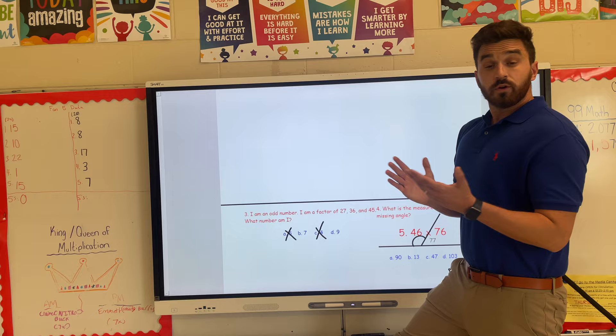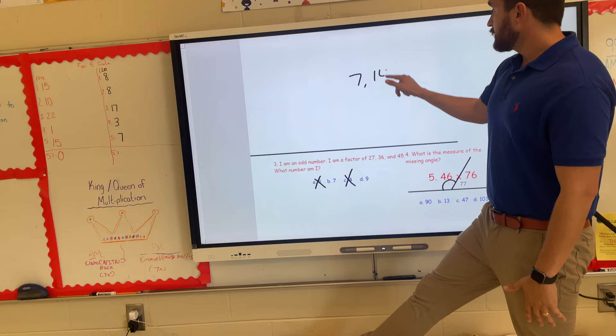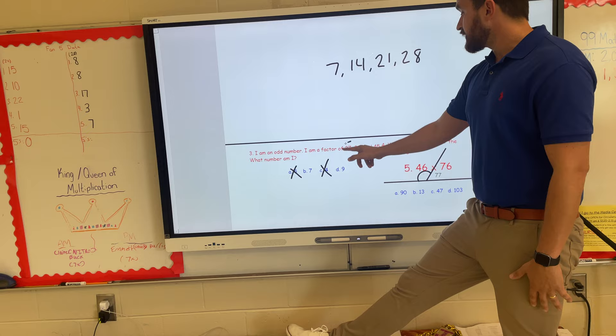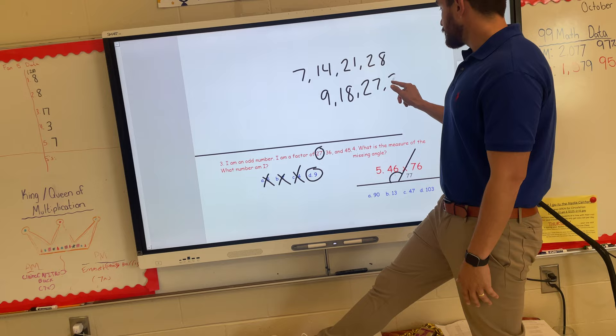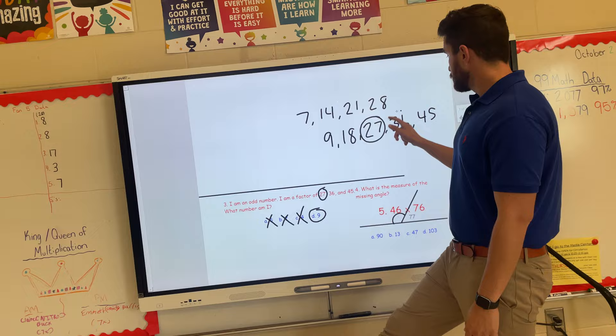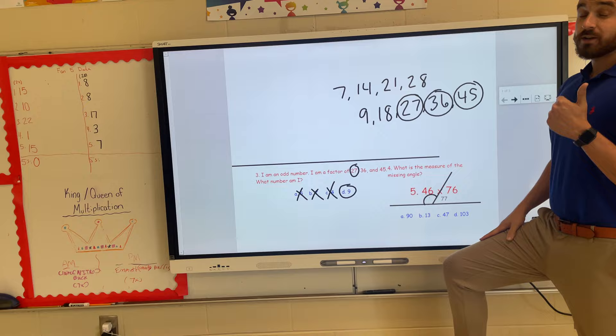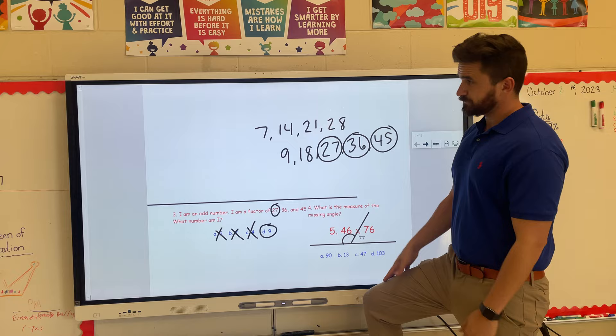If you don't know your facts for seven, you can say hey, I can list my multiples. Seven times one, times two, times three, times four. Once you do that, you see you skip right over 27, so seven could not be a factor of those numbers. Answer is D and we can prove it, because if you did list your multiples of nine, you would see nine times three gave you 27, times four gave you 36, times five gives you 45. So not knowing your facts really isn't an excuse anymore because we can list our multiples and we spend a lot of time doing that. But like I said, 39 out of 44 to start the week—awesome.